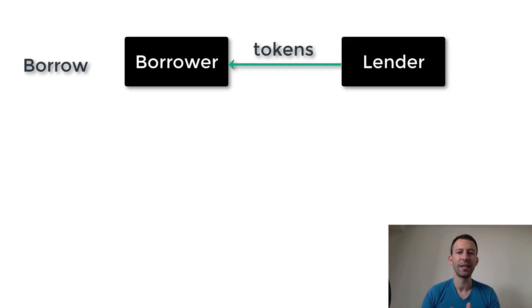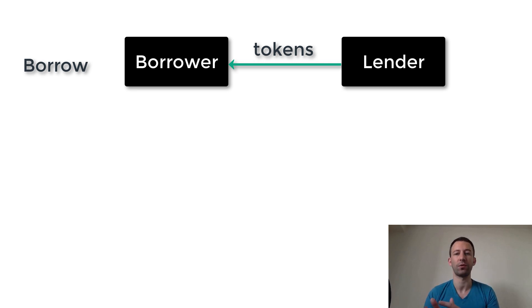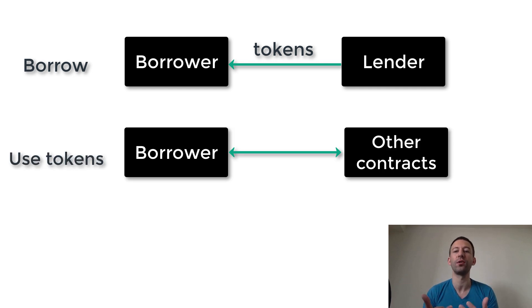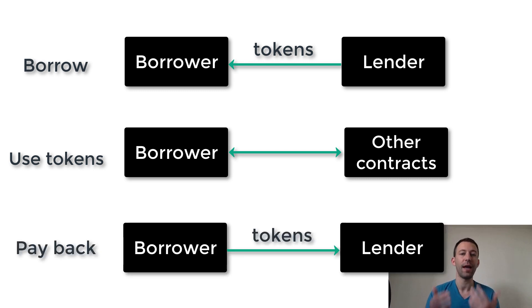In a Flash Loan there are three steps. First, a smart contract borrows tokens from another smart contract on the blockchain. Then with the tokens you borrowed you can use them in whichever way you want. And finally you need to repay the tokens to the lender.